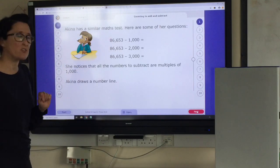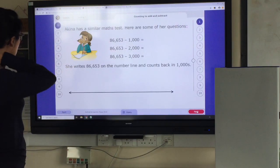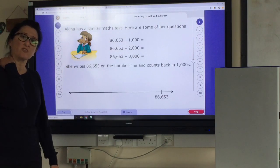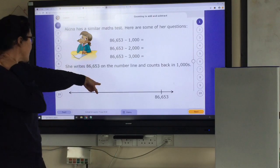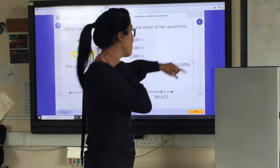So that's the column that's going to change each time when Akina draws her number line. So she's starting off with a number of 86,653. She's going to add a thousand. Oh no, we're subtracting this time. I nearly got caught out there.